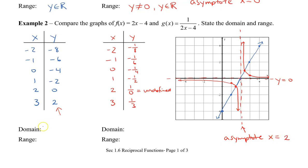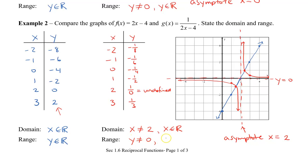Finding our domain and range: for the line, the domain and range are all real numbers. For the reciprocal, the domain is all real numbers where x cannot equal 2 — we can see the asymptote there. And for the range, y cannot equal 0, but it can be all other numbers.